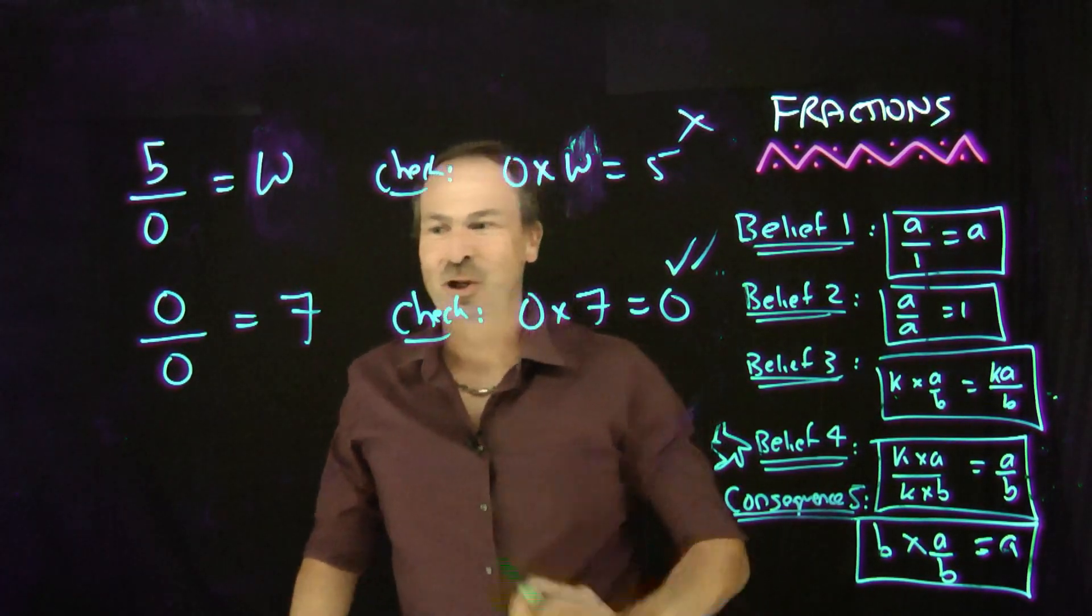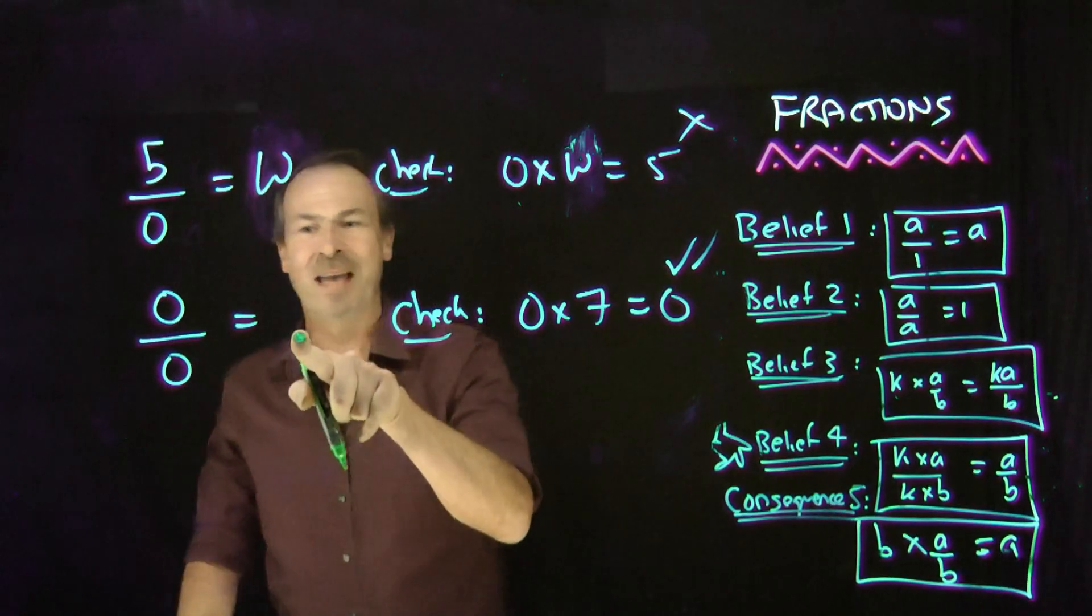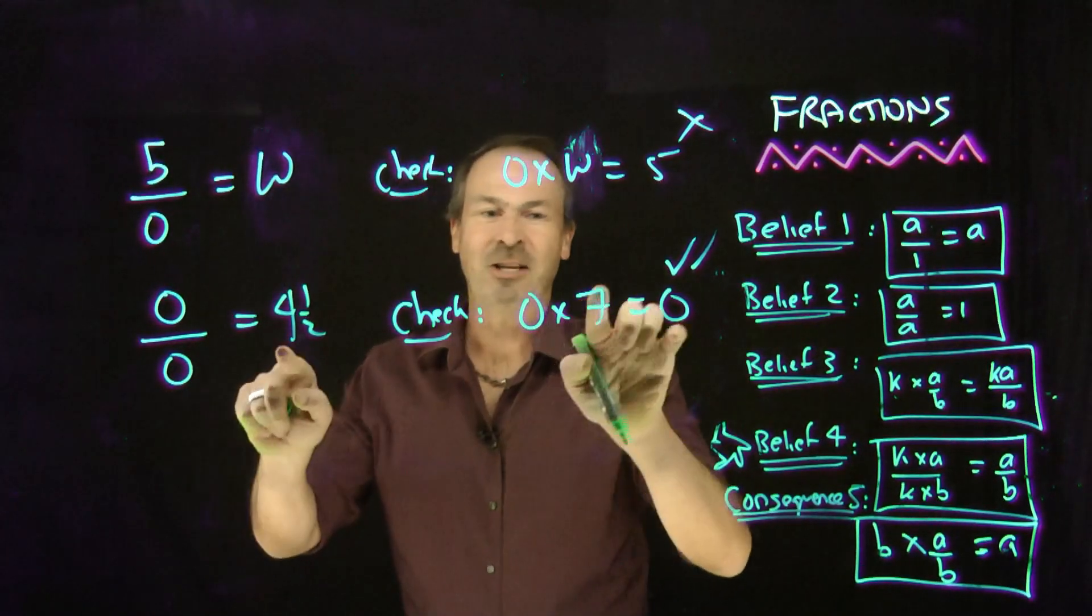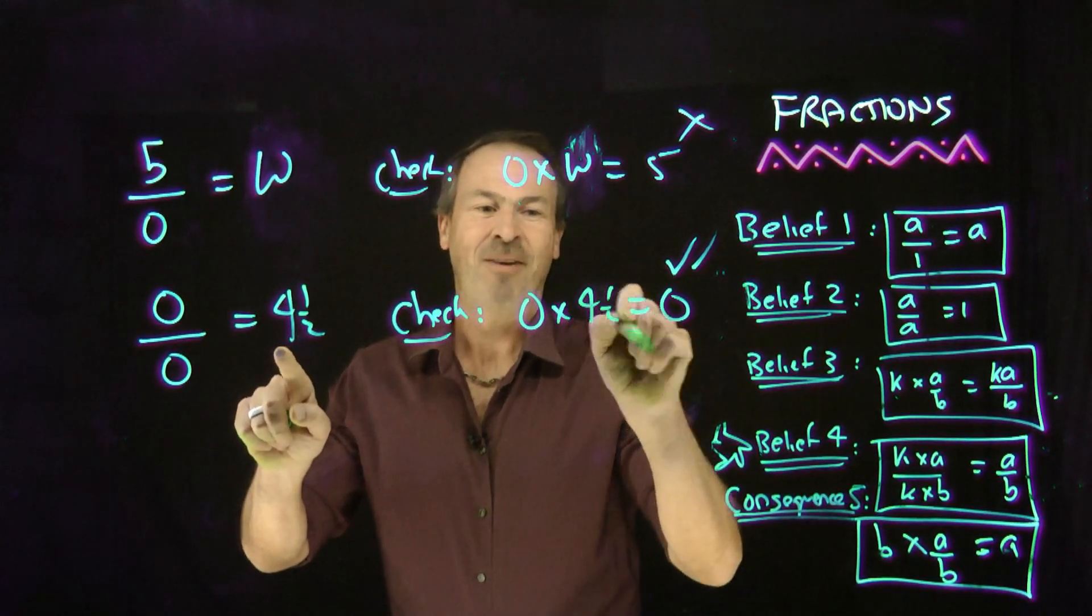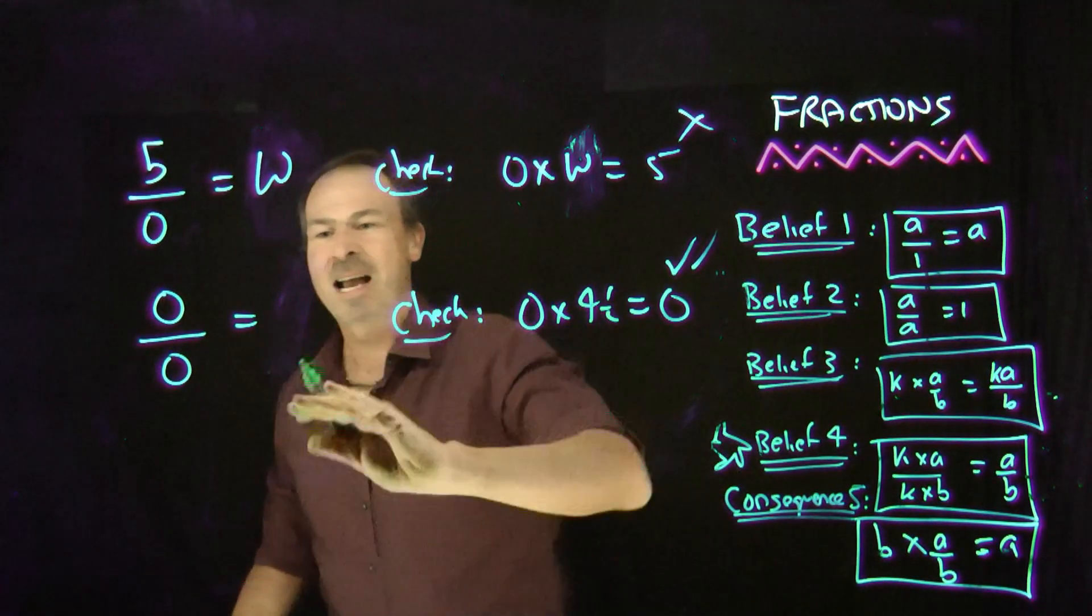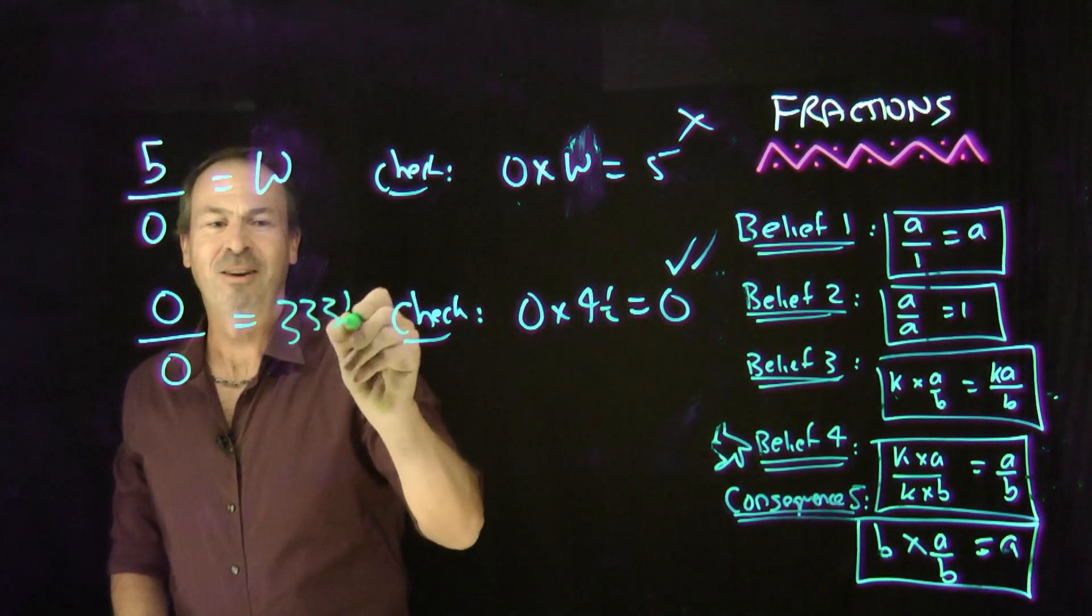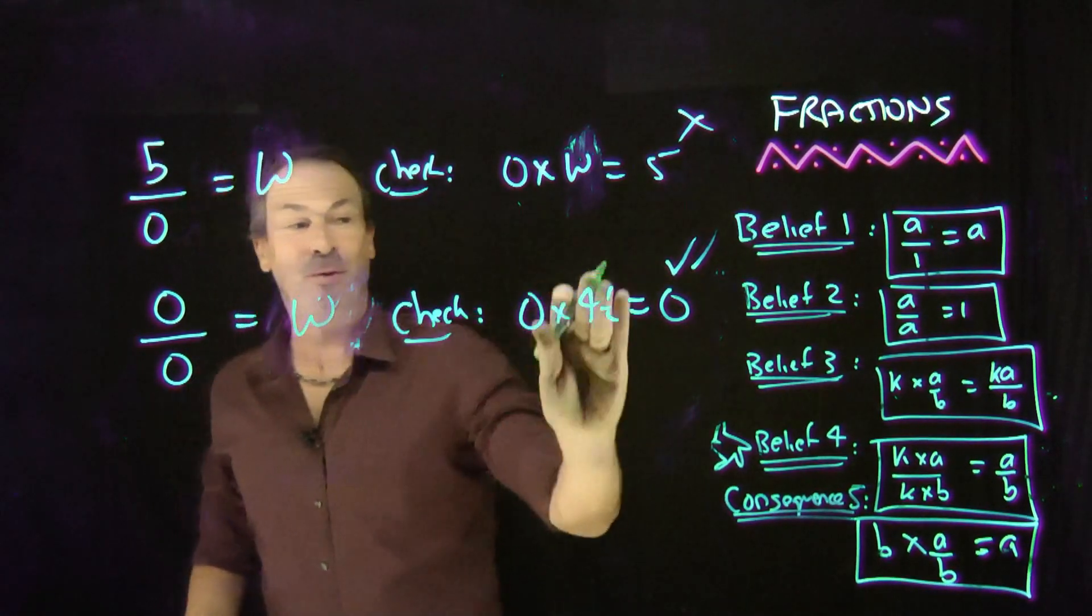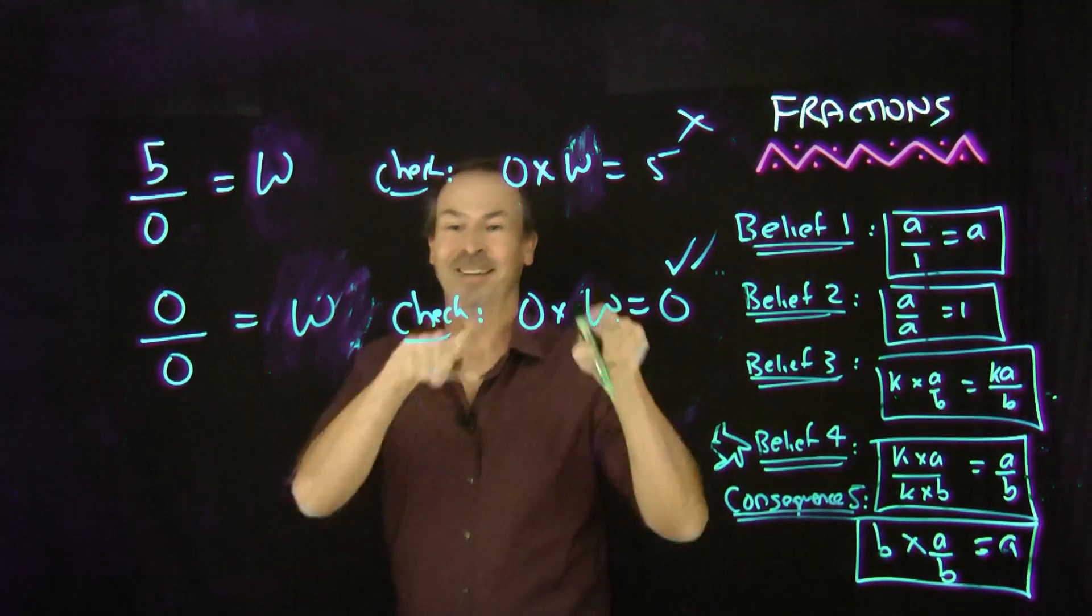But now you're looking at me askance, I'm sure, because actually there's nothing special about 7 there. What if I put 4 and a half there? Does it pass my check? 0 times 4 and a half? Yep, it's still 0. It passes the check. What if I put, say, I know, 333 and a third there? Would it pass my check? Yes! Whatever I put there will pass my check. Beautiful!